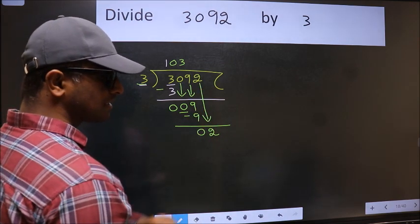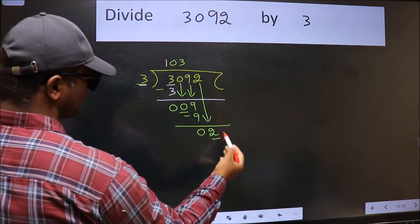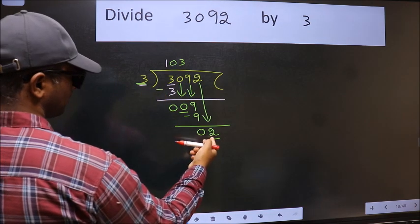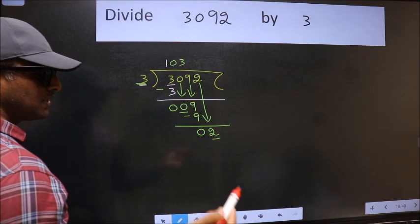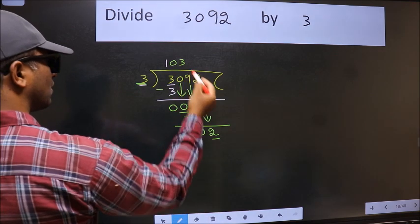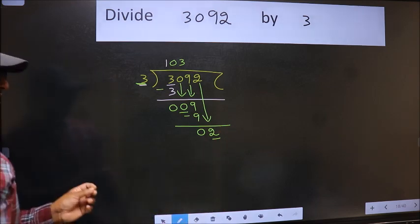the mistake happens. And the mistake is this: Here we have 2 and here 3. 2 is smaller than 3. So what many do is they directly put dot, take 0, which is wrong.